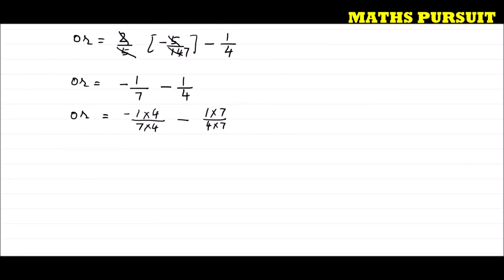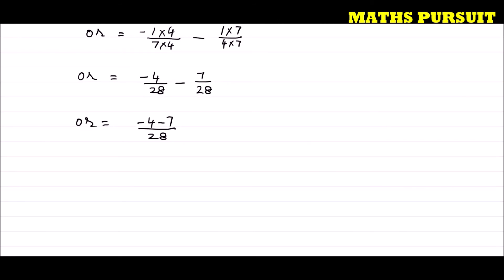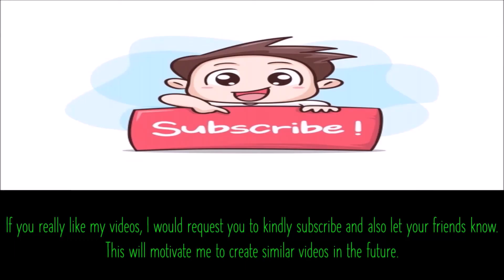That is equal to -4/28 - 7/28, which is (-4 - 7)/28 = -11/28. Our answer is -11/28. I hope we are clear. If you have any questions or doubts, please reach out in the comment section. If you like my videos, please subscribe and let your friends know — this will motivate me to create similar videos. Thank you, bye.